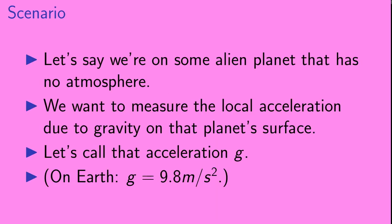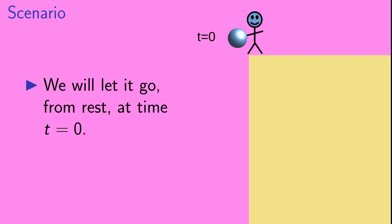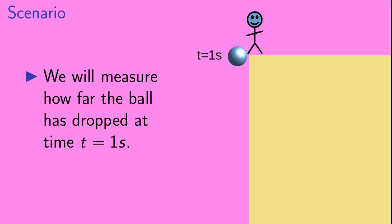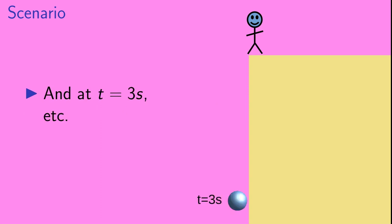Okay, so let's set up a simple scenario. Let's say we're on some alien planet that has no atmosphere. We want to measure the local acceleration due to gravity on that planet's surface. Let's call that acceleration g. And you might remember that on Earth, g is equal to 9.8 meters per second squared. To measure g on this planet, we're going to drop a ball off of a cliff. We will let it go from rest at time t equals 0. We will then measure how far the ball has dropped at time t equals 1 second, and at time t equals 2 seconds, and at t equals 3 seconds, etc.